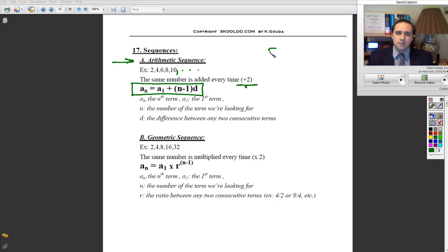For example, if we're looking for the 50th sequence, our answer would be something like this. a50, which is the 50th term, is going to equal a1 plus 50 minus 1 times d.